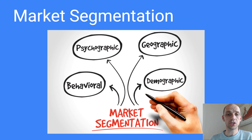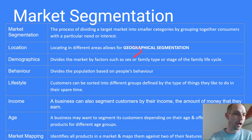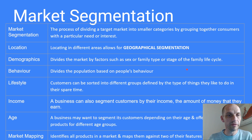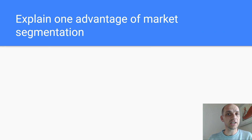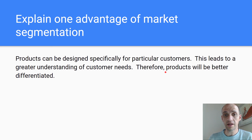Let's move on to market segmentation. Segmenting, just like an orange — segmenting the overall market into customers that have similar characteristics, whether it's geography, age, or interests and hobbies. You can see these key concepts I've highlighted here. Explain one advantage of market segmentation: products can be designed specifically for particular customers. This leads to a greater understanding of customer needs. Therefore, products will be better differentiated — therefore, customers will be more satisfied.